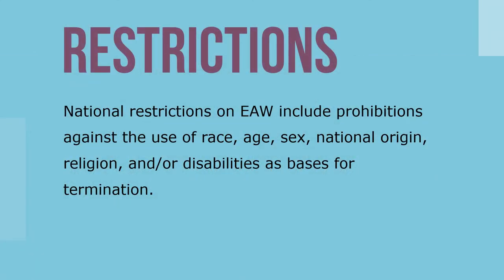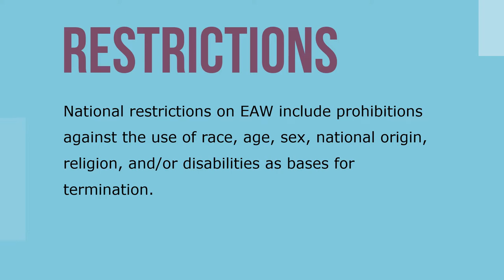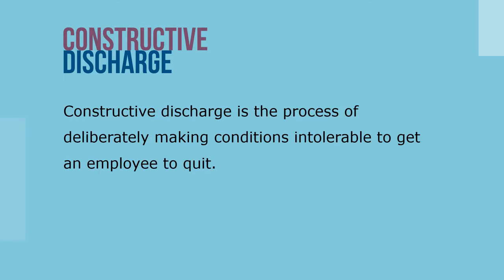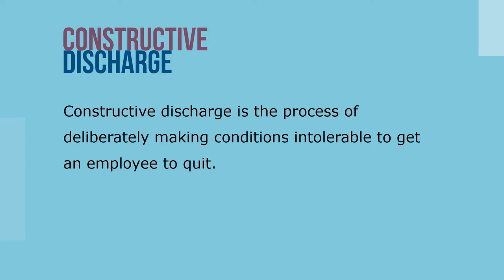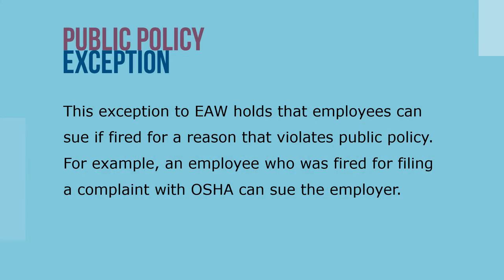National restrictions on employment at will include prohibitions against the use of race, age, sex, national origin, religion, and/or disabilities as basis for termination. Wrongful discharge refers to the termination of an individual's employment for reasons that are illegal or improper. Constructive discharge is the process of deliberately making conditions intolerable to get an employee to quit. The courts have recognized certain exceptions to employment at will. The public policy exception holds that employees can sue if fired for a reason that violates public policy — for example, an employee who was fired for filing a complaint with OSHA can sue the employer.